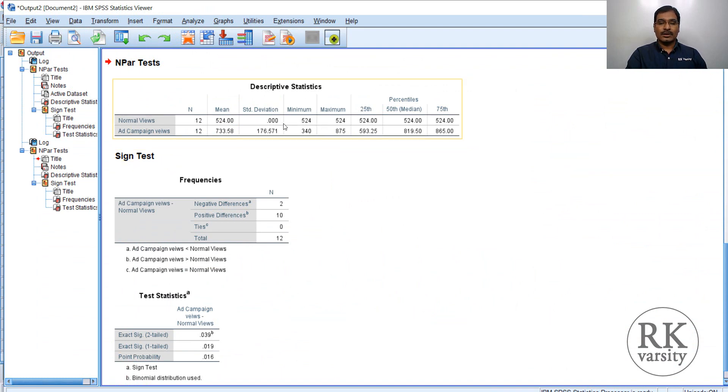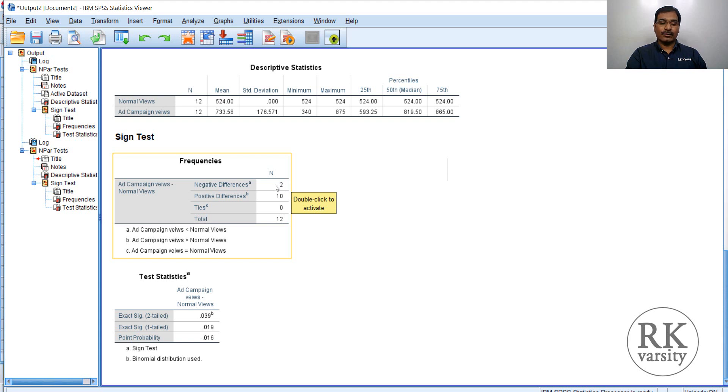The result is here. Normal views 524, median is 524. And ad campaign views are 819. That means when you run an ad campaign, her channel has witnessed more views compared with the median views of normal 524. It is 819 views now. Now negative differences, that is less than 524, only 2. Positive differences, 10. And ties are 0. So we consider all the 12 values. And here if you observe the test statistics, the probability value, exact sign test has a probability value of 0.039, which is less than 0.05. Where we reject the null hypothesis, saying that ad campaign has impact on getting additional views for her channel. Even if you look at the exact sign, here it is one-tailed, 0.019, which is again less than 0.05. And from observations here, we see that the ad campaign views are higher.